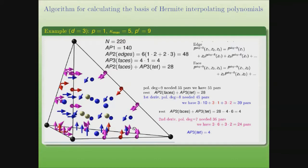Because there are two directions and a mixed derivative, we have the full number of polynomials: 220. The number of auxiliary polynomials is 140, with 45 auxiliary polynomials across all edges and four auxiliary polynomials of the third type on the faces of the tetrahedron. The auxiliary polynomials of the second type provide continuity of derivatives in the vicinity of two faces.